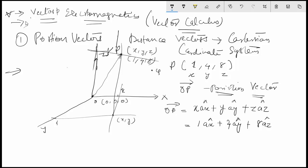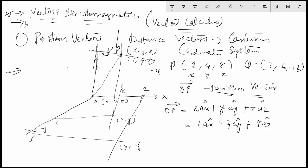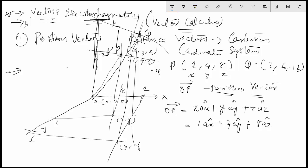Now suppose I have another point Q equal to (2, 6, 12). Plotting this: X=2, Y=6 in the XY plane, and Z=12 going upward. Joining this point Q with the origin gives the OQ vector, which can be written as 2·ax + 6·ay + 12·az.